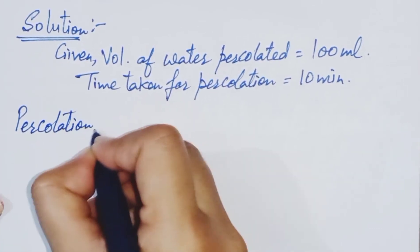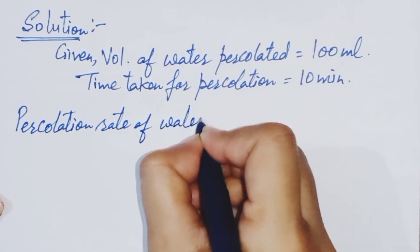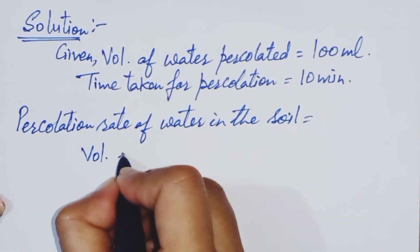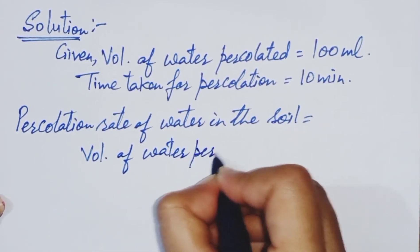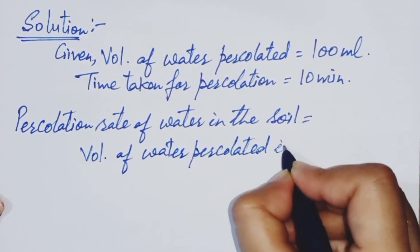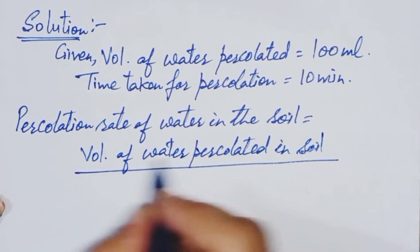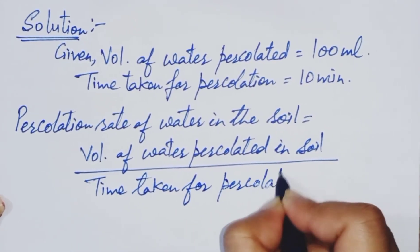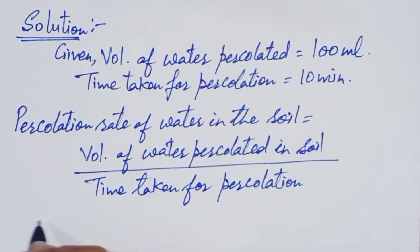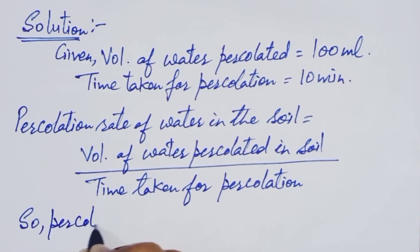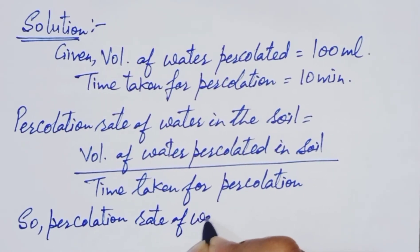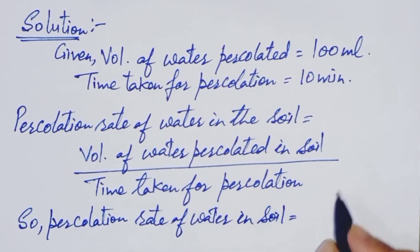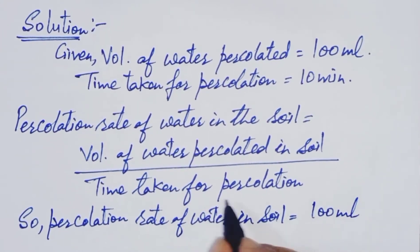Now we have to calculate the percolation rate of water. Percolation rate of water in the soil is equal to volume of water percolated in the soil divided by time taken for percolation. So percolation rate equals 100 ml divided by 10 minutes.